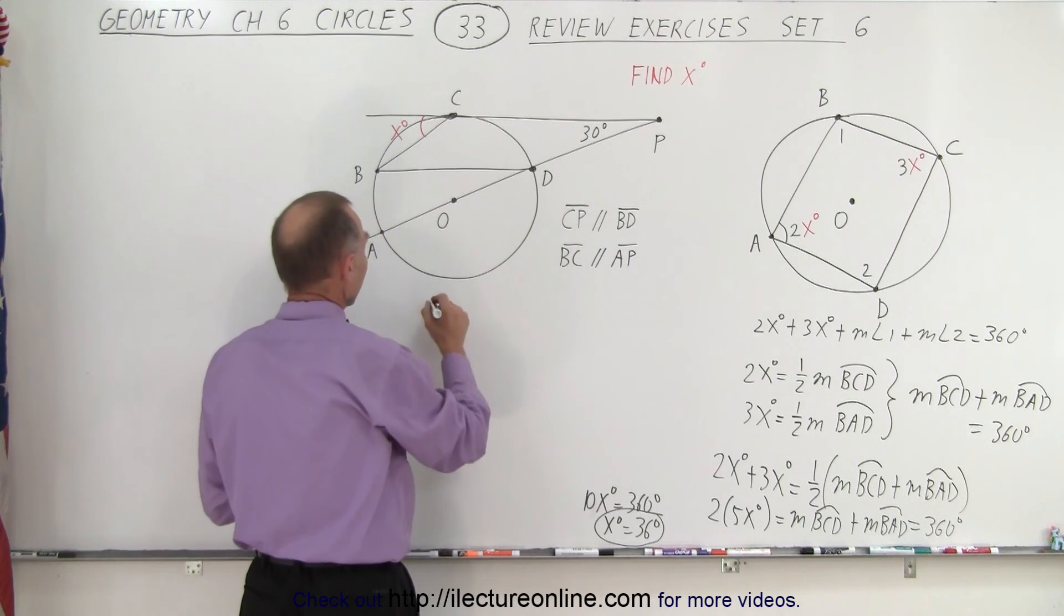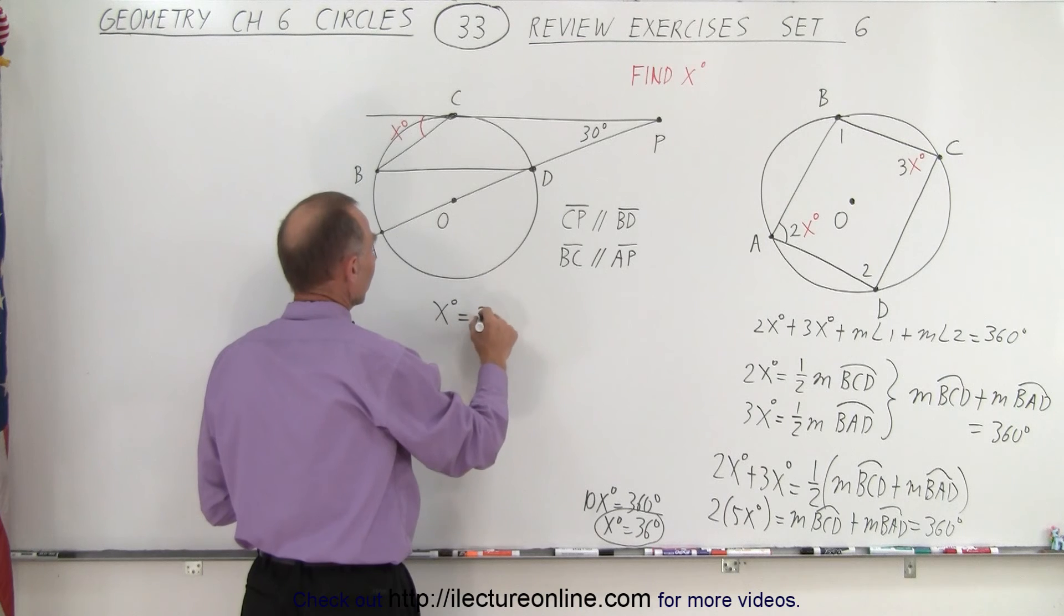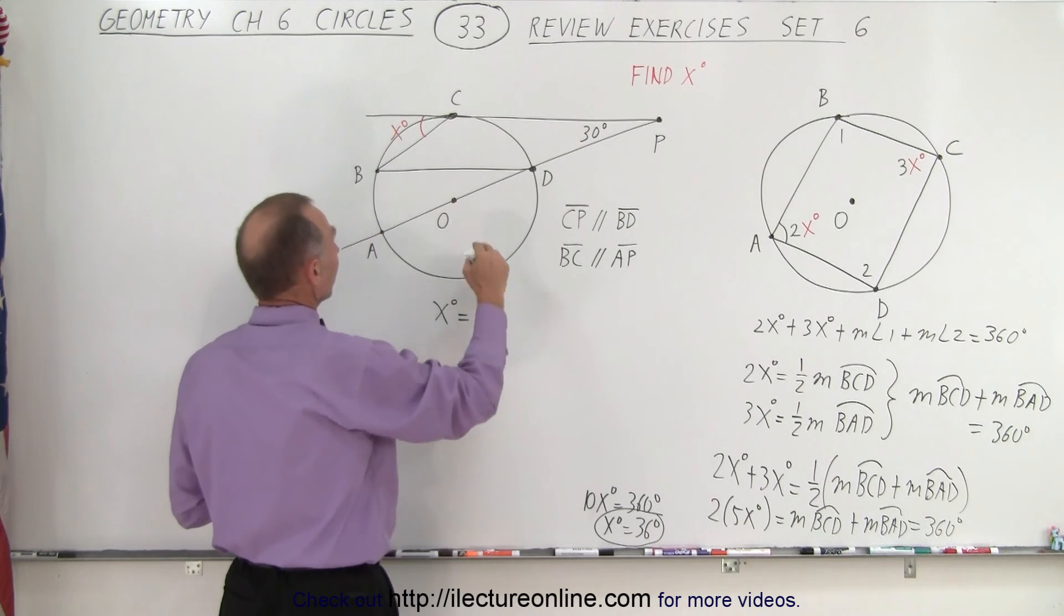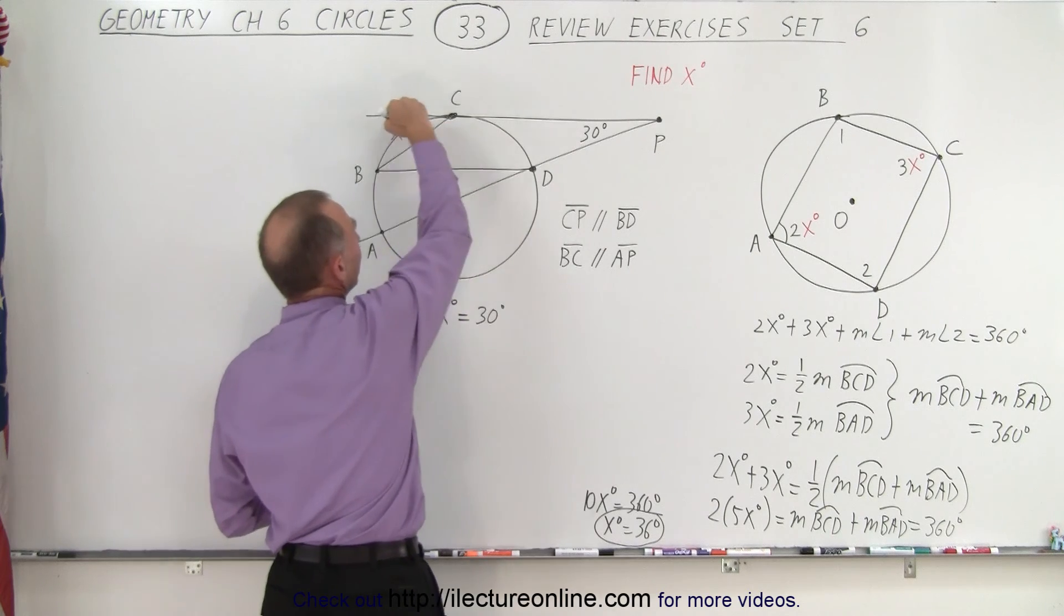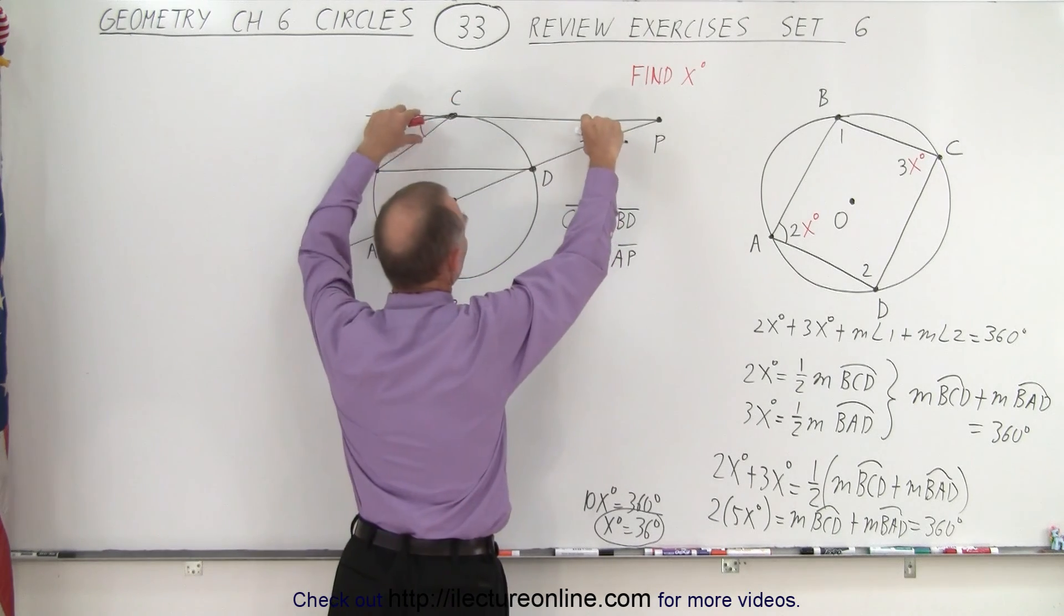So simply said we know that x degrees equals 30 degrees. Simply by saying that if this line is parallel to this one and they come to the same line here that these two angles must therefore be equal.